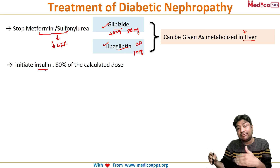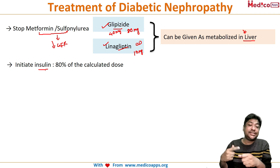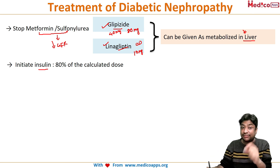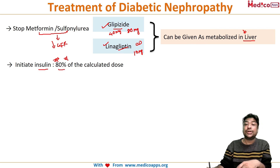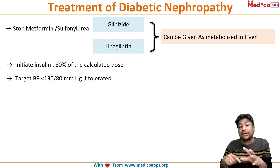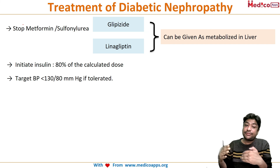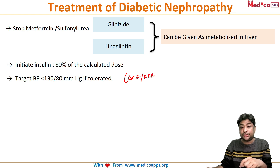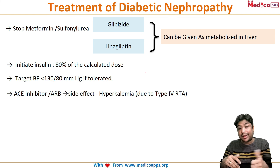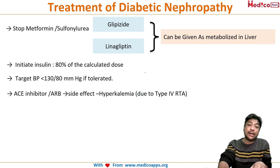Initiate insulin early for good glycemic control, but when GFR is decreasing, use 80% of the calculated dose as insulin remains longer in the body. Keep blood pressure around 130/80, using ACE inhibitors or ARBs as the drug of choice. However, because these drugs cause hyperkalemia compounded by the existing type 4 RTA, closely monitor potassium levels at regular intervals.